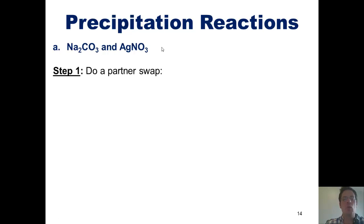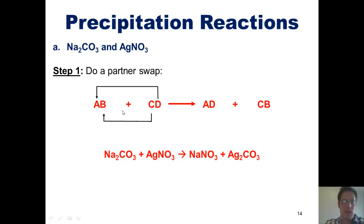Step one is do your partner swap. Remember, in our partner swap, we look at cation A and get him together with anion D. We then get cation C together with anion B and write out the products that are formed. Here's our example. I've got sodium carbonate reacting with silver nitrate. That was given to me in the problem.